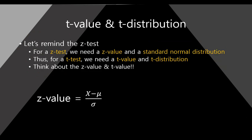Let's remind the z-test. When we do a z-test, we need a z-value and a standard normal distribution, and of course, a z-table. Likewise, we need a t-value and t-distribution for the t-test. The process is very similar — almost the same. So, likewise the z-test, we need a t-value; likewise a z-value, we need a t-distribution; likewise the standard normal distribution. Same process.